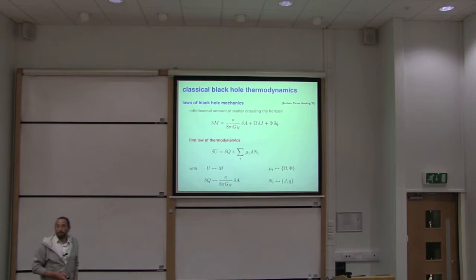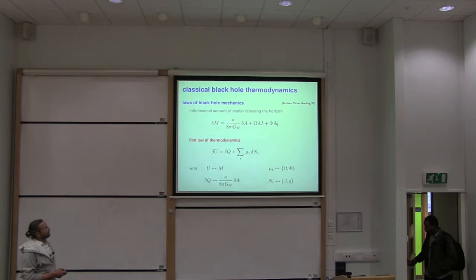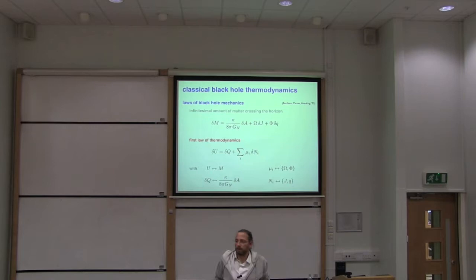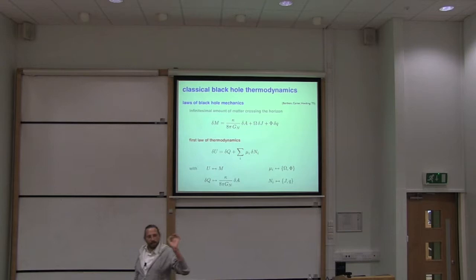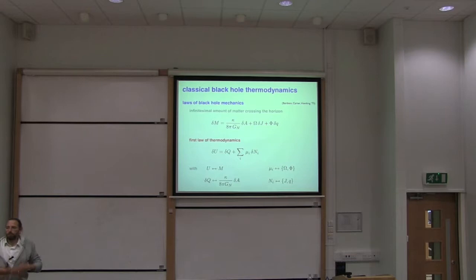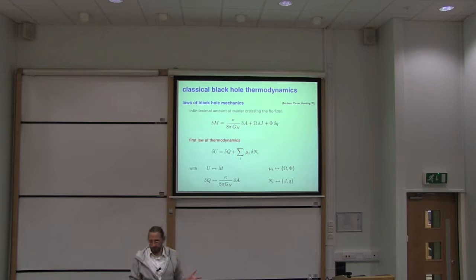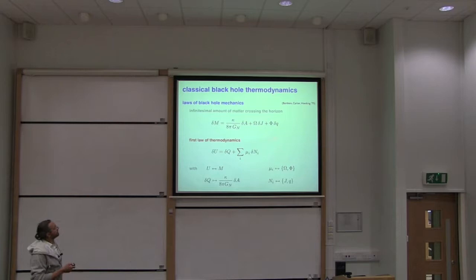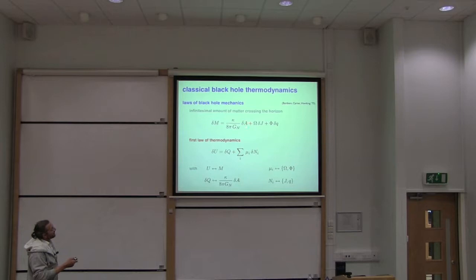Imagine you have a black hole of a certain large mass. You take a small test particle of small mass, and throw it into the black hole. After you have done it, you will end up with a new black hole which has a slightly larger mass and slightly different parameters. So in order to describe this process infinitesimally, you may write down how the change in mass of the black hole is related to the change of horizon area, the change of angular momentum, and the change of charge.